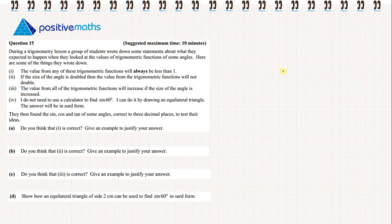Number 1: the value from any of these trigonometric functions will always be less than 1. Number 2: if the size of the angle is doubled, then the value from the trigonometric function will not double. Number 3: the value from all of the trigonometric functions will increase if the size of the angle is increased. And number 4: I do not need to use a calculator to find the sine of 60 degrees — I can do it by drawing an equilateral triangle.